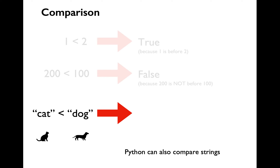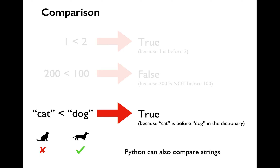How can we compare two strings using comparison operators? Let's say that we want to compare string 'cat' less than string 'dog'. Python is going to look at the individual characters within each of those strings and compare them. It's going to compare C with D. The character C comes before the character D, so 'cat' less than 'dog' evaluates to true. Just like in a dictionary, you get the term cat before dog.